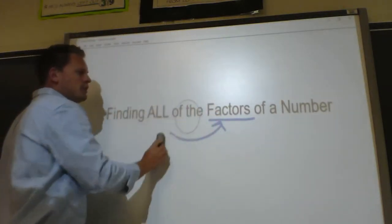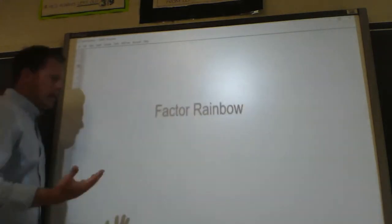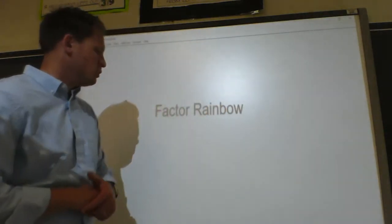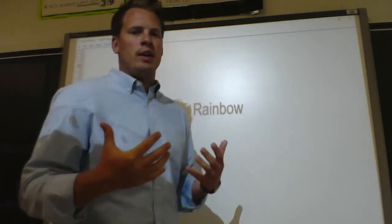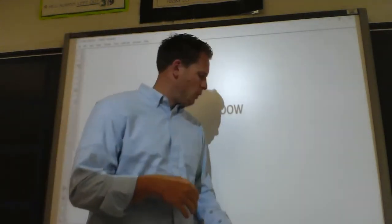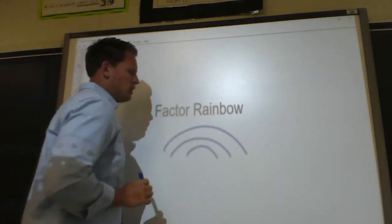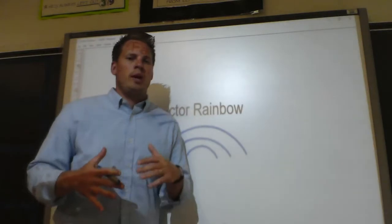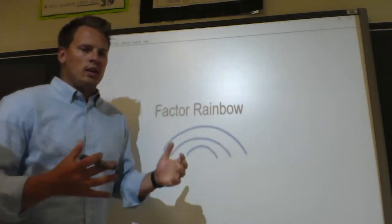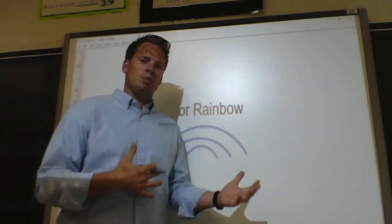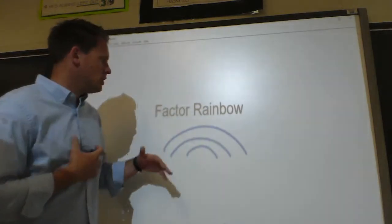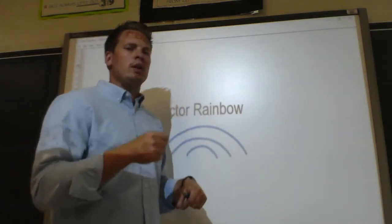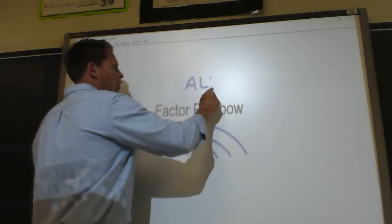Today we're going to find all the factors of a number. I believe that last year you learned how to find factors, and there are many methods to do it. But the best method I've found is what's called a factor rainbow, because when you're done with it, it looks like a rainbow. Those rainbow strands have very important pieces — your numbers are going to be under these rainbow strands. I highly encourage the factor rainbow because there is a system in place that checks every single number to make sure that you find all the factors.